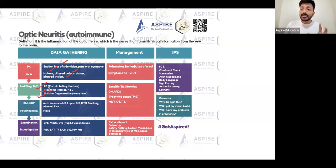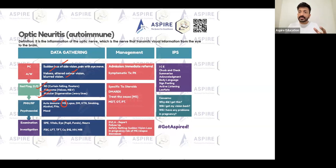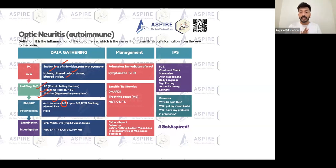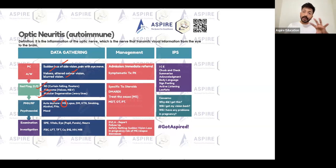Optic neuritis might be only an eye problem, but sometimes the patient has other systemic problems as well. The autoimmune condition to look for is MS - multiple sclerosis. Patients may give a family history of MS. MS is mostly seen in females in their 30s. In your past medical history, ask about any autoimmune conditions. It could be optic neuritis alone, or it could have an underlying cause such as MS, lupus, diabetes, or hypertension.